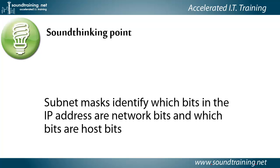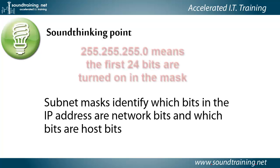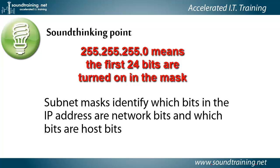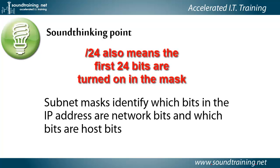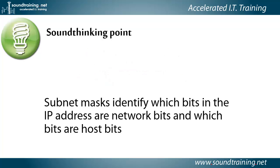Whether it's expressed in traditional dotted decimal notation like 255.255.255.0, or in the modern CIDR — classless inter-domain routing — notation as a slash 24, it means exactly the same thing: the first 24 bits are turned on and are network bits.